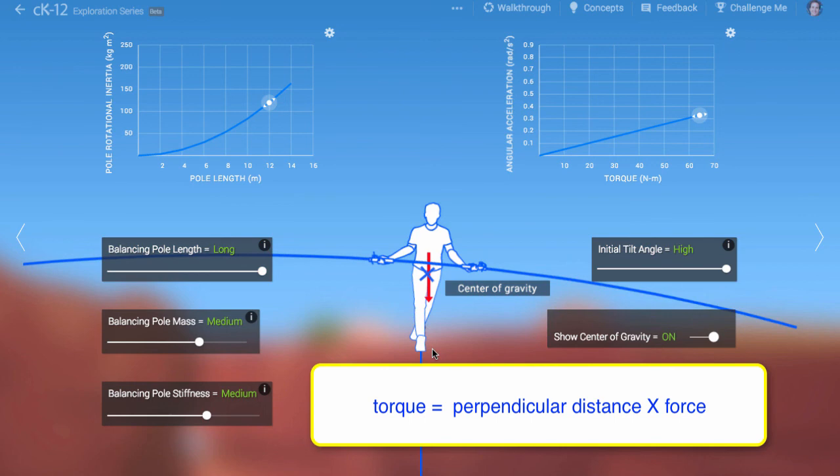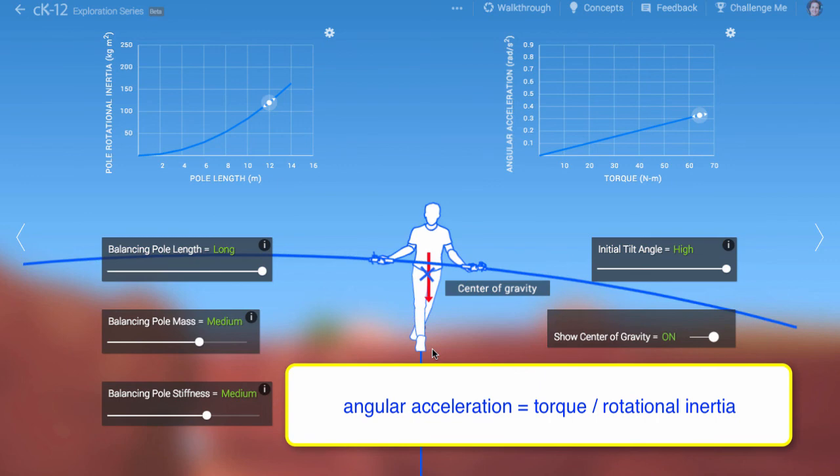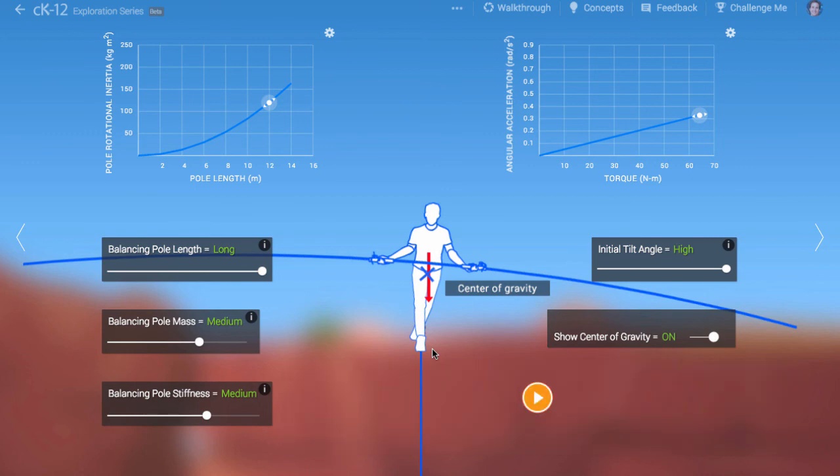If you divide this torque by the total rotational inertia of the system, which includes both the pole's inertia but also the walker's inertia, you'll get the angular acceleration shown. Play around and see what you can figure out.